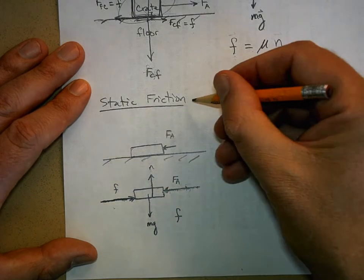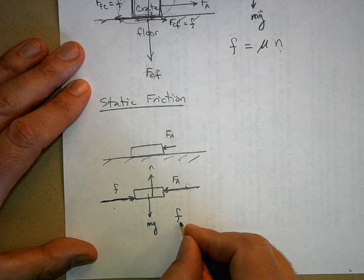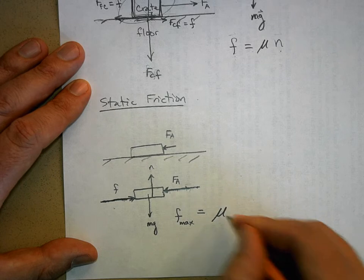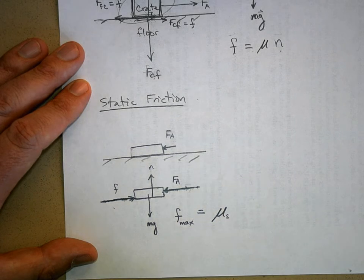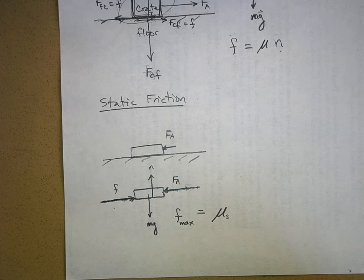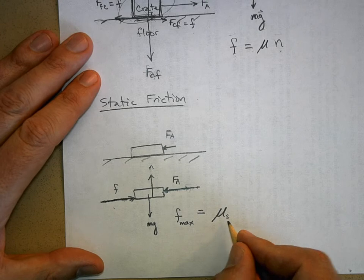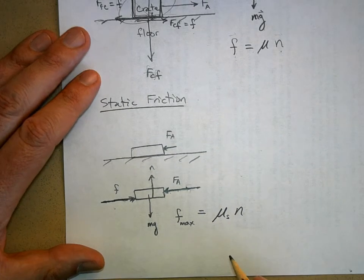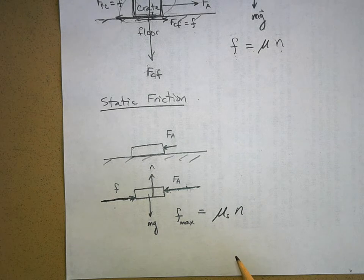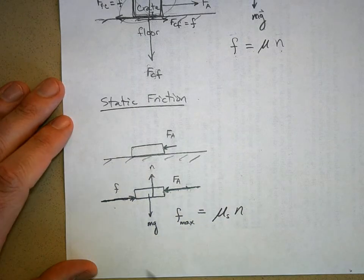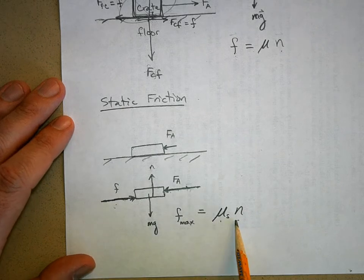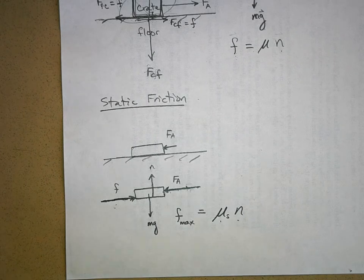If you have static friction, we say the maximum force of friction I can get is equal to mu sub s — the static coefficient of friction — times the normal force. Here's the thing to realize: when you multiply by the static coefficient of friction times the normal force, you're getting the maximum possible static friction.